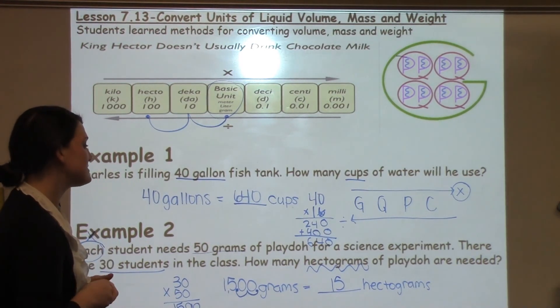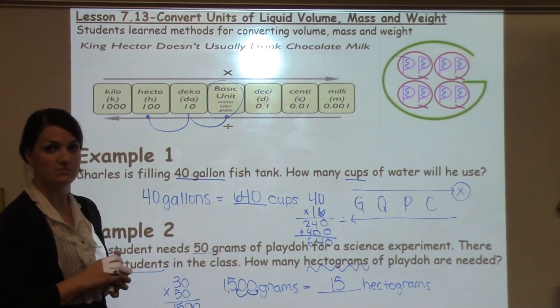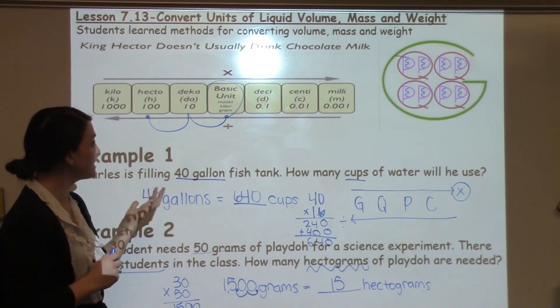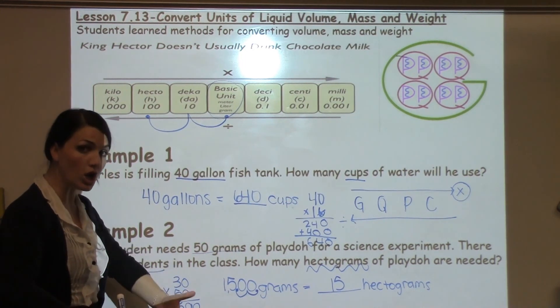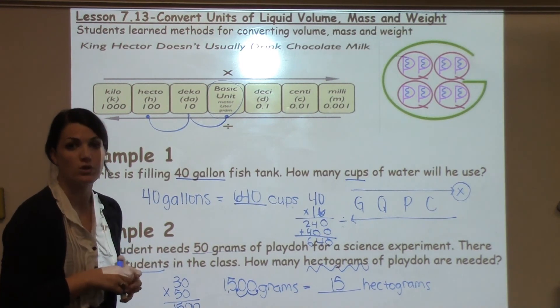And then you can really think about, does that make sense? If I've got more grams than I do hectograms, it does make sense because hectograms are larger amounts, so I would have a smaller number of them because they are worth more.